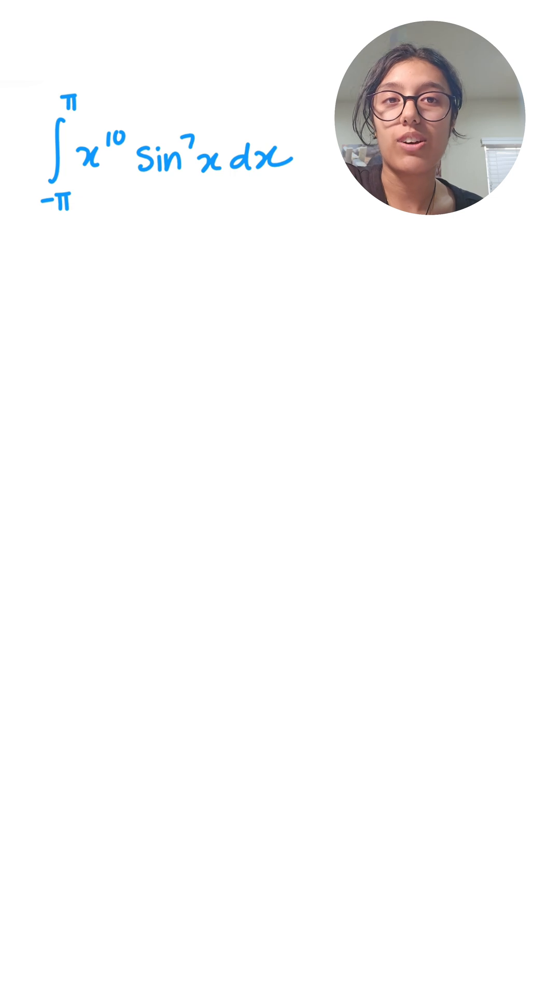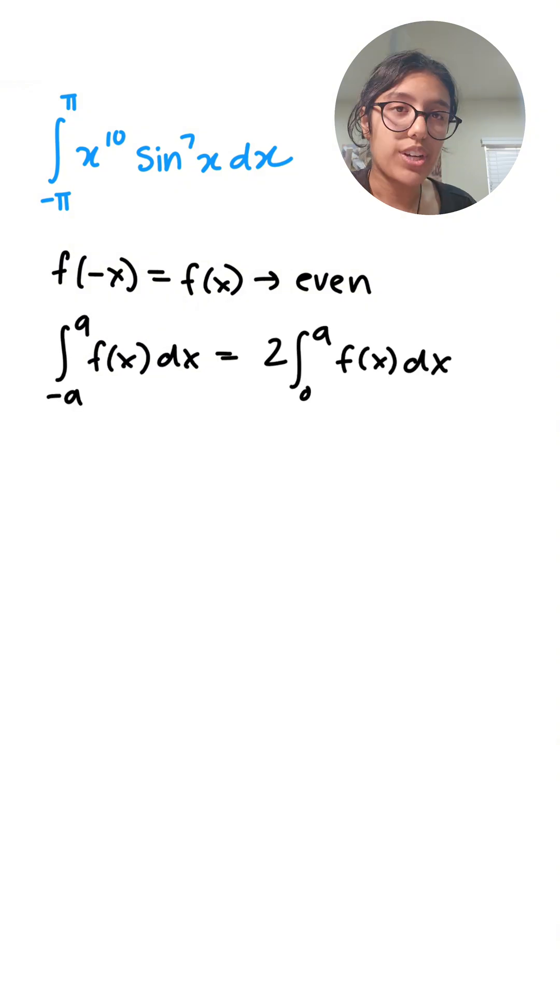As we know, an even function basically says that f of negative x is equal to f of x. That is the even function. And if our function is even, then the integral would look something like this. So here we are assuming f of x is the even function.